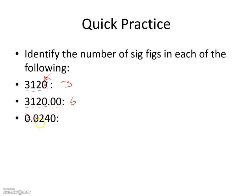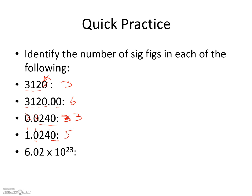Next: 0.02400. Zeros at the beginning of a number are never significant, so those leading zeros don't count. Zeros at the end — is there a decimal? Yes, so those count. That gives us the 2, 4, 0, and 0 — wait, let me recount: 0.02400 has the 2, 4, and the two trailing zeros, so four significant figures. Then for 1.0240: the 1, 2, and 4 are nonzero — that's three. The zero between the 2 and 4 is between two nonzero digits, so significant. The trailing zero has a decimal, so also significant. That gives five sig figs total.